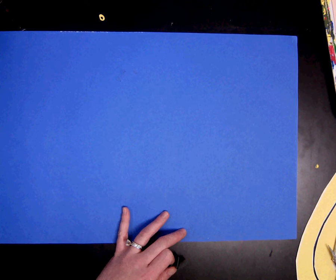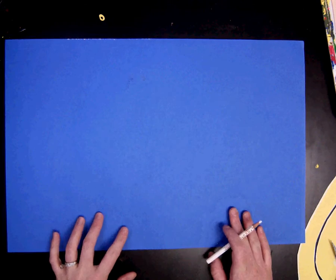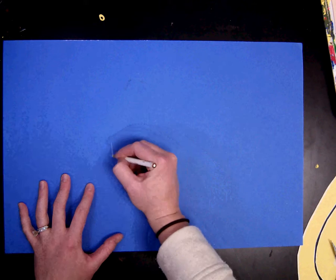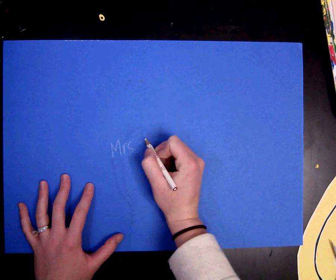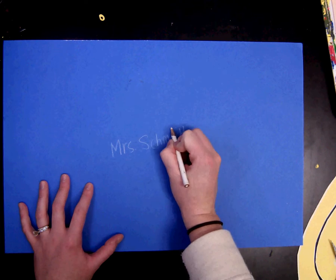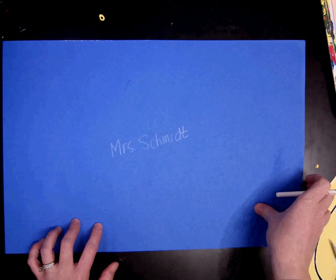So the first thing that I want you to do is on your blue paper on the back with a white colored pencil, I want you to write your name. Put it right in the middle so that it's easy to find. Then you can flip it over.